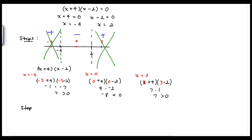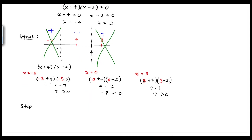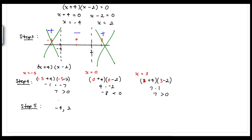Step five says we can write our answer in interval notation. The interval from negative 4 to 2 gives us negative values. Since we have a strict inequality, we use parentheses, giving us the solution (−4, 2).